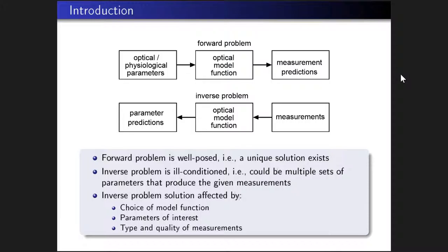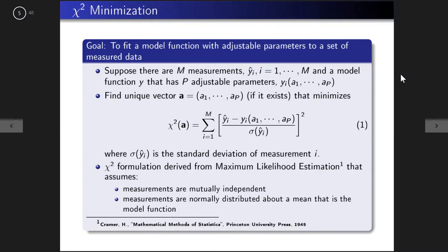The inverse solution is affected by your choice of model function, the parameters you're trying to find, and the type and quality of the measurements. In chi-squared minimization, the goal is to fit a model function — like SDA or Monte Carlo — with adjustable parameters to a set of measured data. Suppose you have M measurements and a model function with P adjustable parameters such as optical properties. The goal is to find a unique vector A of length P that minimizes the chi-squared function.